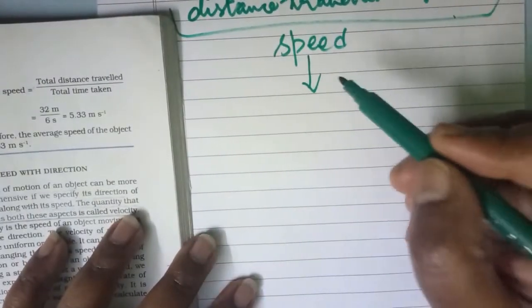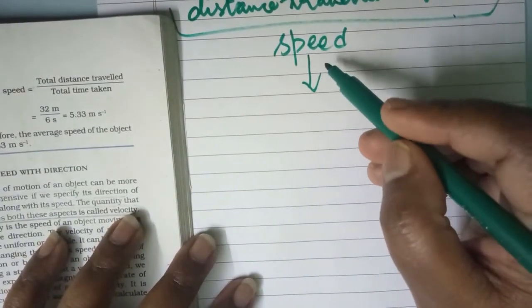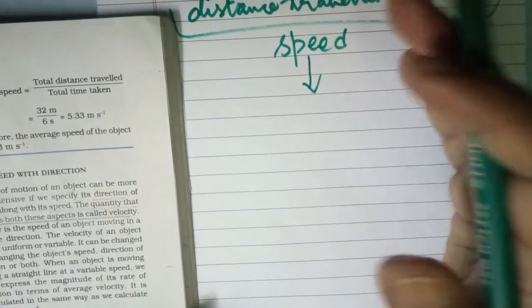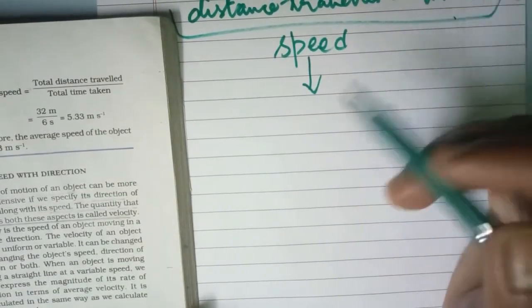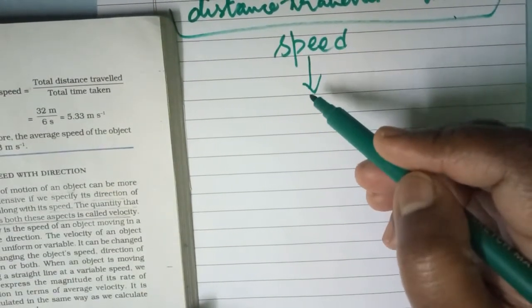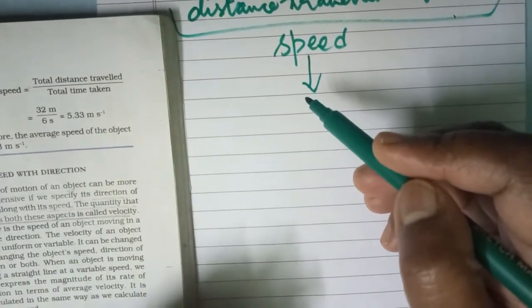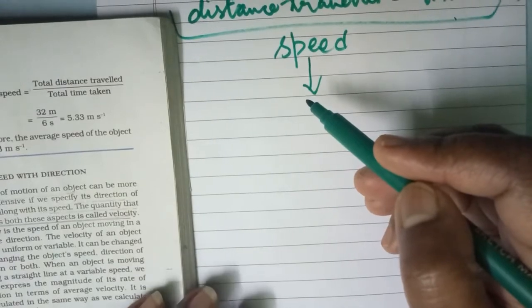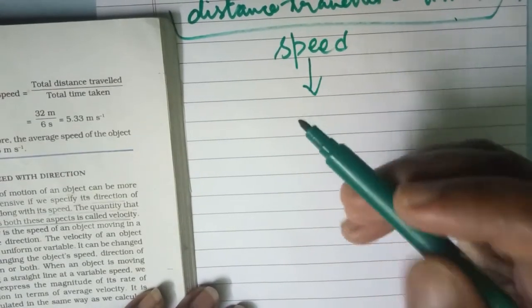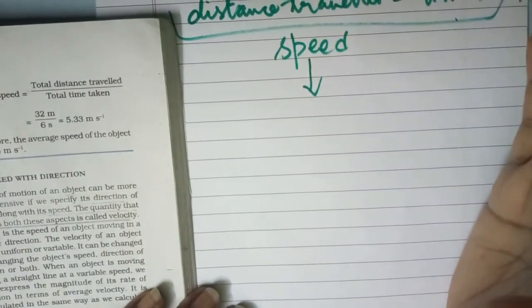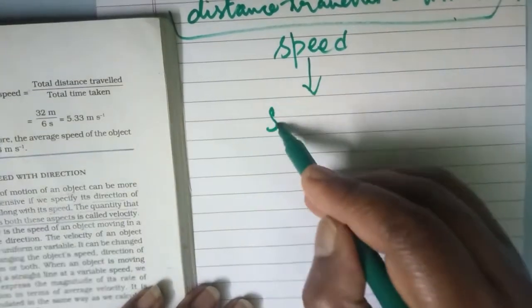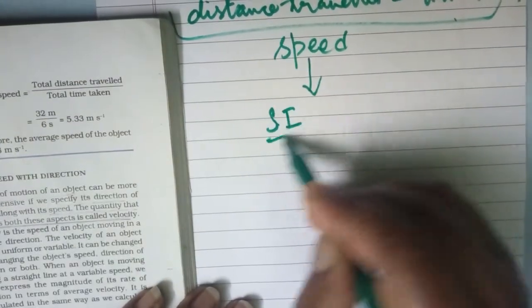If we have to specify the speed of an object we need to have certain units. So let us look at the SI unit of speed.